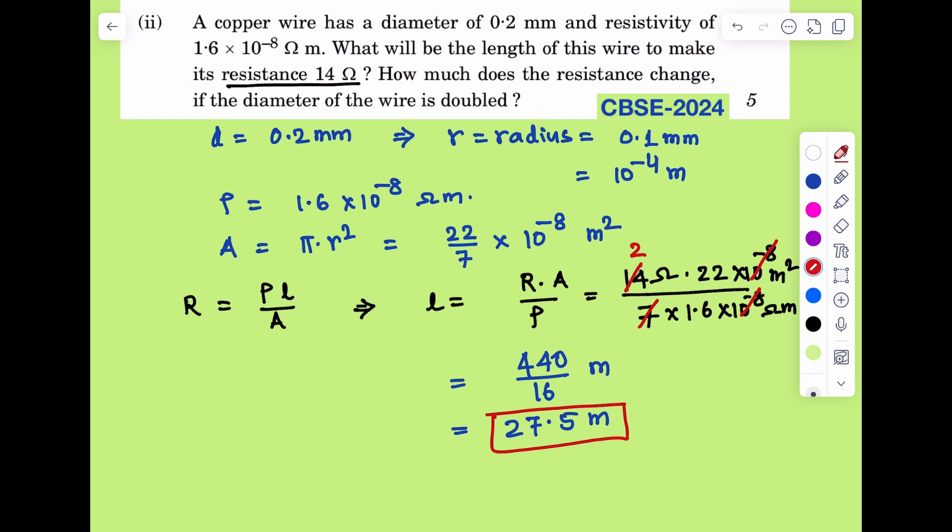Now second bit is given: how much does the resistance change if the diameter of the wire is doubled? If diameter doubled, that means d dash, suppose when its diameter is d, corresponding area is equal to A.